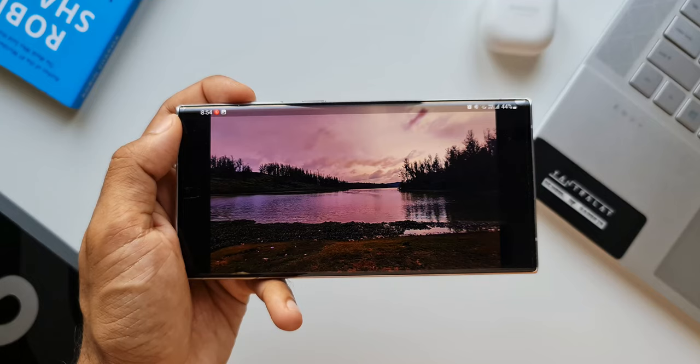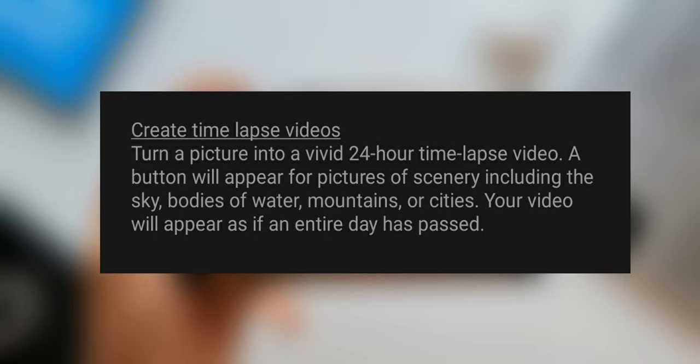Let's go ahead and see what Samsung says about this feature. In the changelog of One UI 4.1, Samsung said this feature can turn a picture into a vivid 24-hour time-lapse video. A button will appear for pictures of scenery including the sky, bodies of water, mountains, or cities.